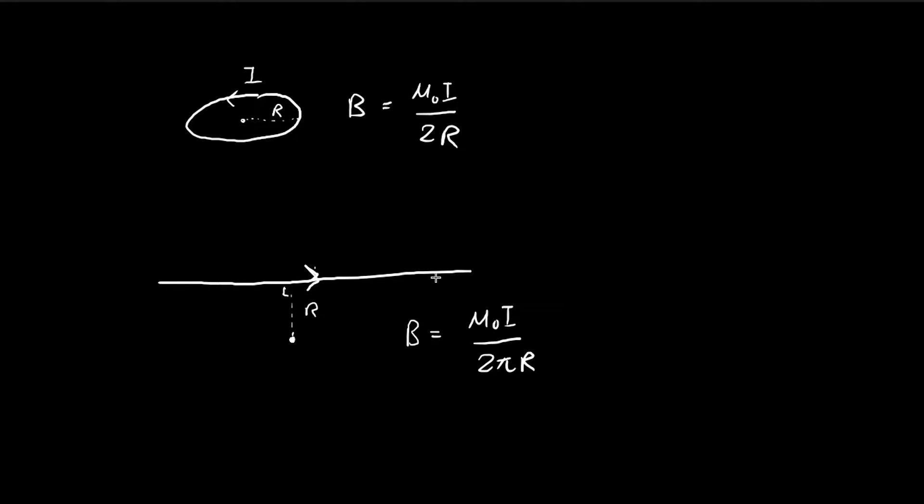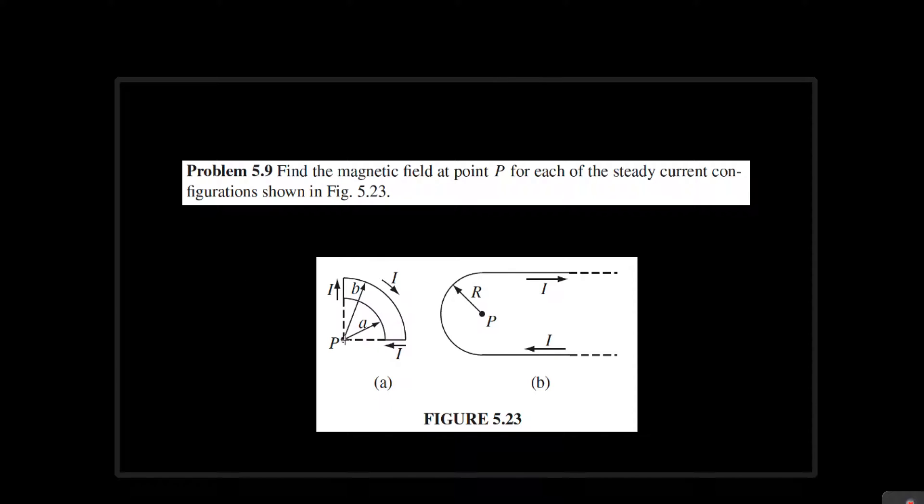And for this, we have a line of wire with current going along it. The magnetic field at this point will be equal to this. I'm not going to prove these results - you can find many examples in the book. Using these two results, we can solve for the magnetic field at point P for these two cases.